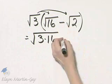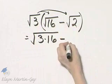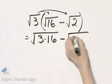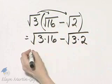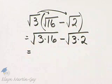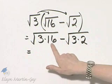And then minus square root of 3 times square root of 2 is square root of 3 times 2. Now, is there any simplifying that can be done? Here the answer is yes.